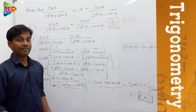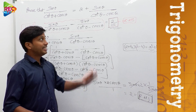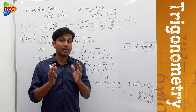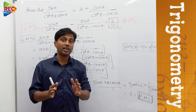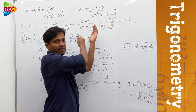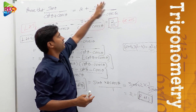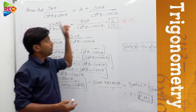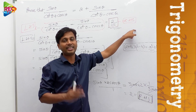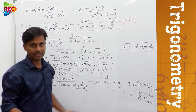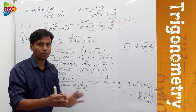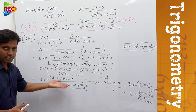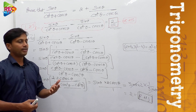The key takeaway: we shouldn't take LHS as given in the original problem. We need to do some modification — after taking one term to the other side, consider the entire rearranged expression as LHS and get the value 2 as RHS. That is how we proved it. Observe this step-by-step process, and let us move on to the next problem.